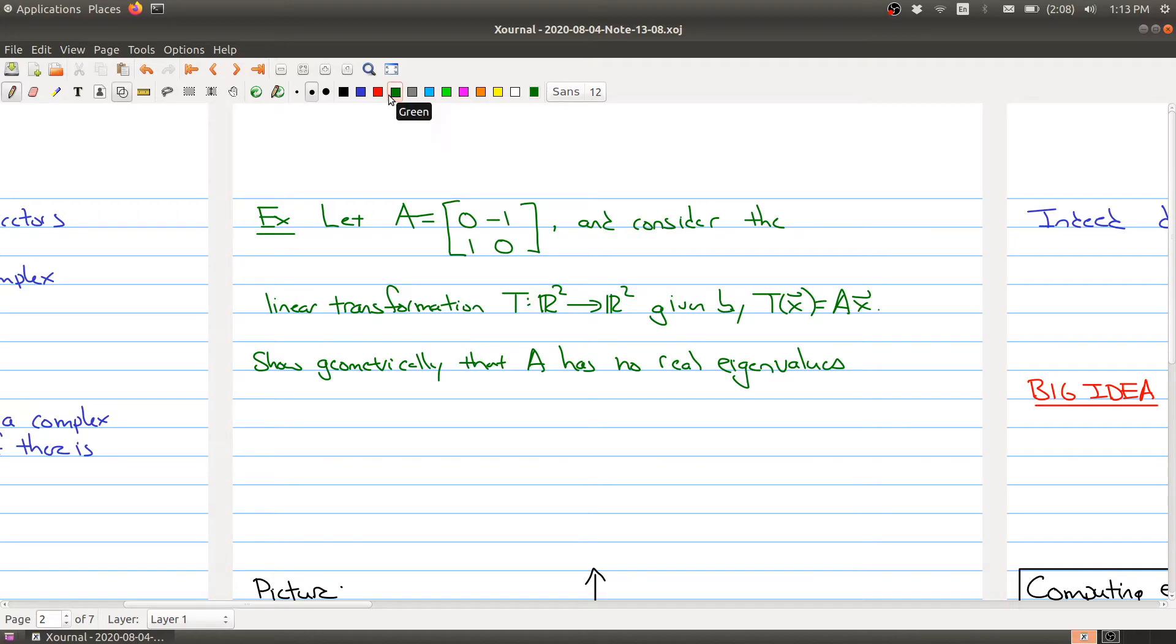What we want to do is show geometrically that A has no real eigenvalues. One way to observe this is that for any point (a,b) in the plane, when we stick it into our function, if we take (a,b) and say where does it get mapped to, it gets mapped to the point 0, negative 1, 1, 0 multiplied by (a,b). And when I multiply that out, I get (-b,a).